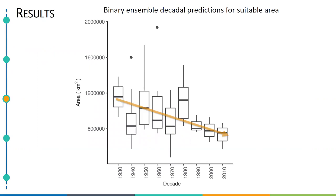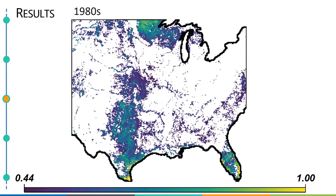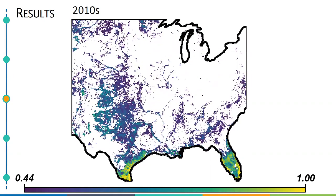When we examined our binary model predictions by decade, we found a trend toward decreased landscape suitability over time. These binary ensemble predictions for each decade show a general decrease in suitable area over time. Starting with 1940 and progressing forward, areas are becoming less suitable overall — shown by cooler colors — and the remaining suitable areas are becoming more fragmented.